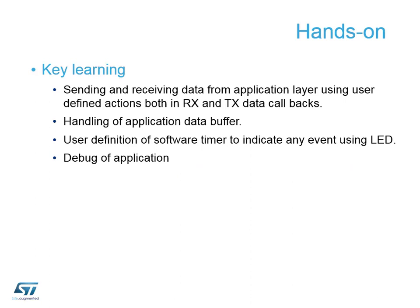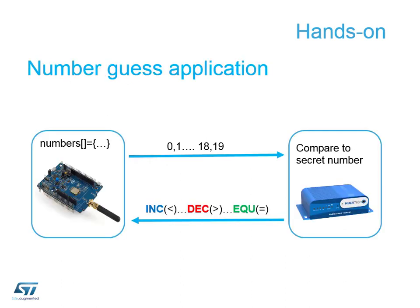We are going to create two routines for sending and receiving data — our RX and TX callback routines. We'll manage the application data buffer, which is an array of numbers, configure a software timer so you can visually see how to use one of these timers on one of the LEDs on our target board. Then we'll debug our application and look at the gateway response window to see all the network traffic.